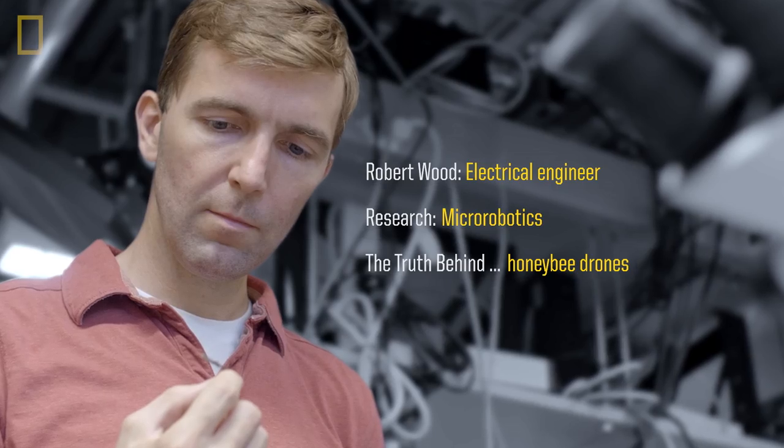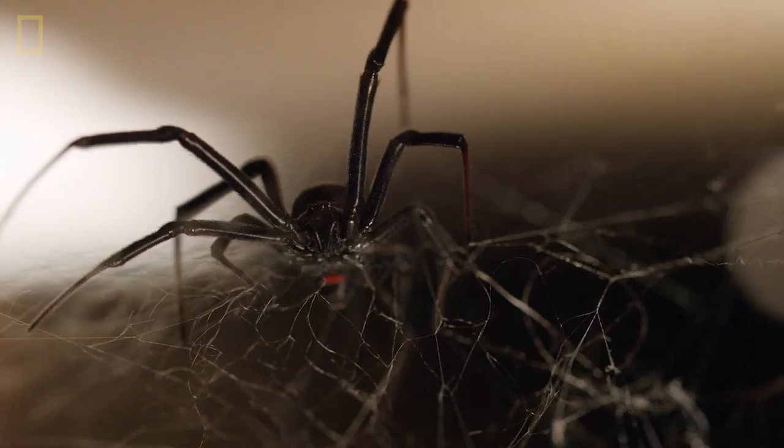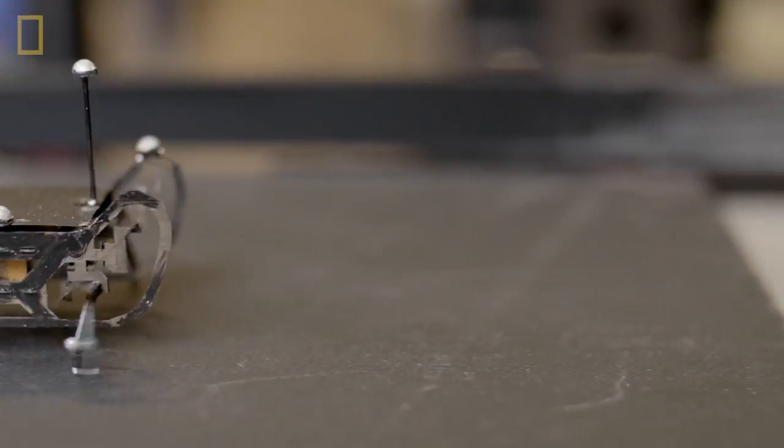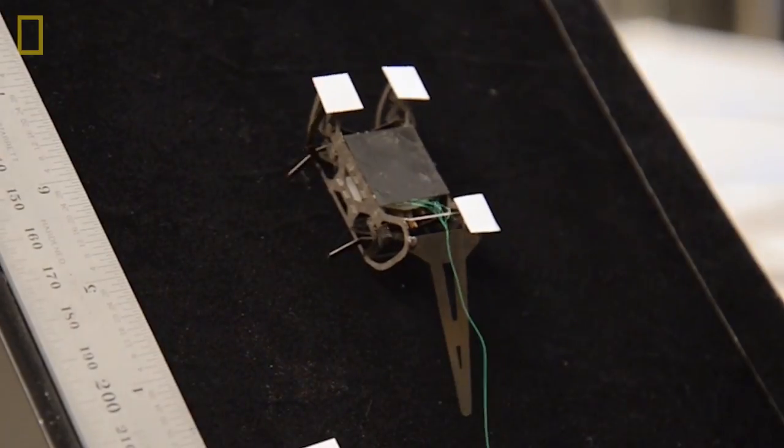Right now we're in the micro-robotics lab. We're about to see some test stations where we test robotic insects. I think where we get our design inspiration from is a lot of the times nature. There's good reasons for that. One of the cool things about these types of robots is they could be used for exploration. You can get into little nooks and crannies that other robots could not get into.